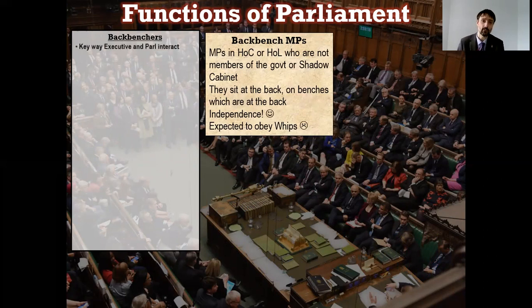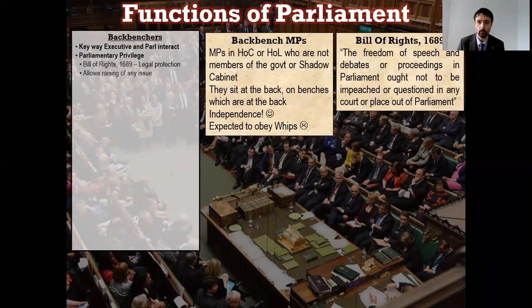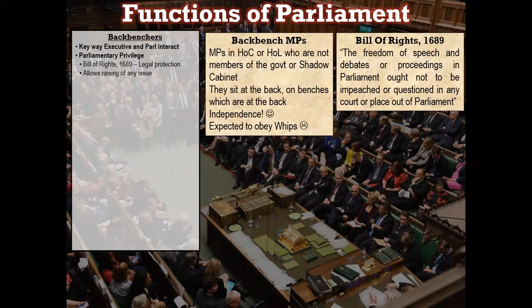Backbenchers are a key way that the executive and Parliament interact - the main vector of communication between the two. They're protected by parliamentary privilege, set in place by the Bill of Rights in 1689. It offered legal protection for what politicians said in Parliament: 'The freedom of speech and debates or proceedings in Parliament ought not to be impeached or questioned in any court or place out of Parliament.' In other words, if you say something in Parliament, you cannot be taken to court for libel or hate speech. The idea is it allows MPs the safety to raise any issue worthy of the nation's or the government's attention.